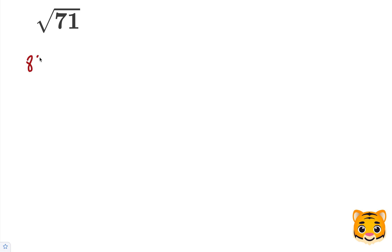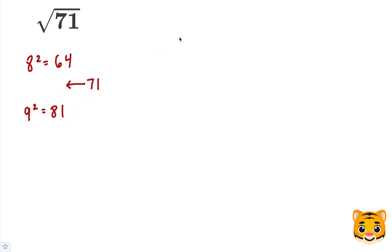Examples of this include 8 squared, which is 64, and 9 squared, which is 81. We can see that 71 falls between 64 and 81, so we can write the following inequality: 64 is less than 71, which is less than 81.